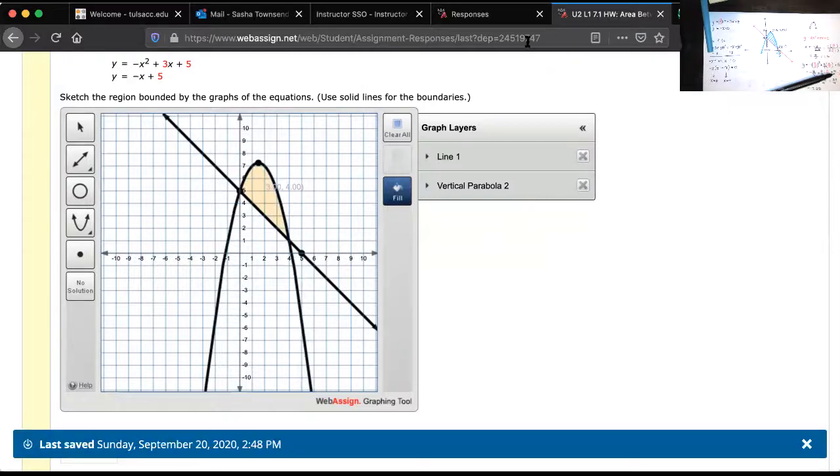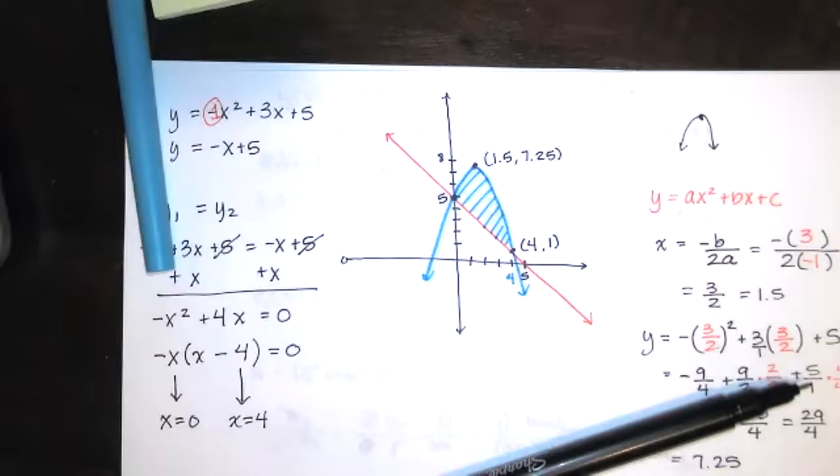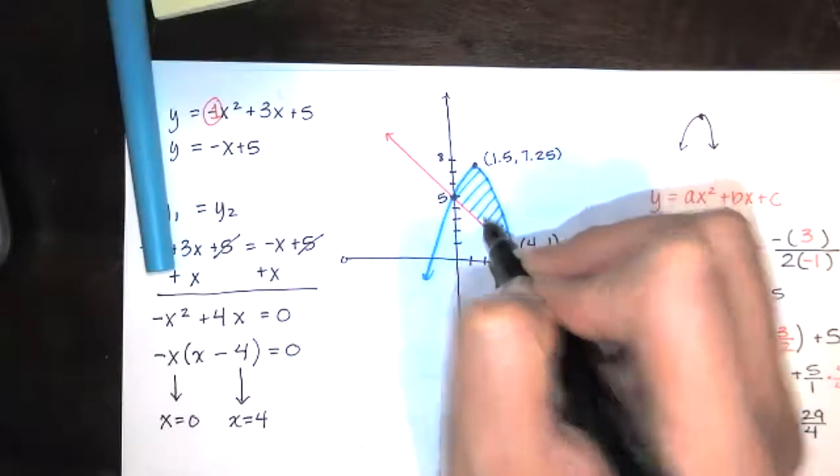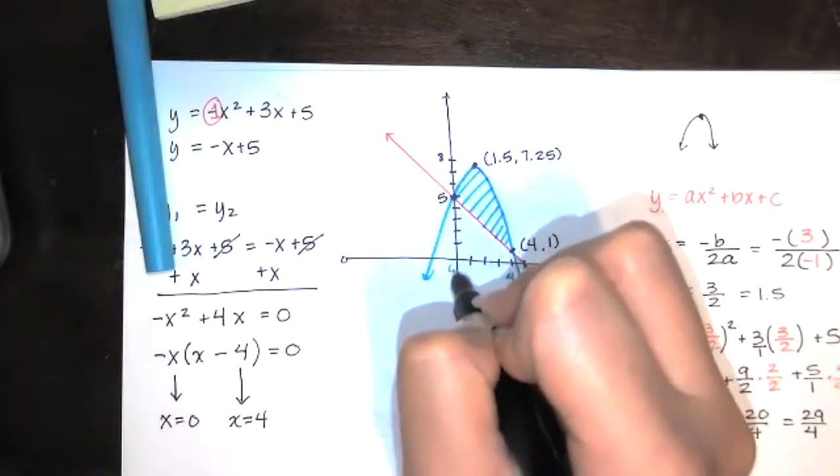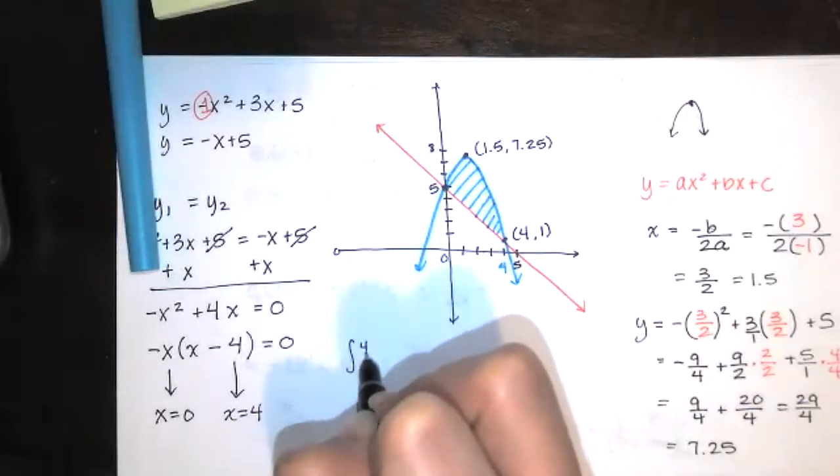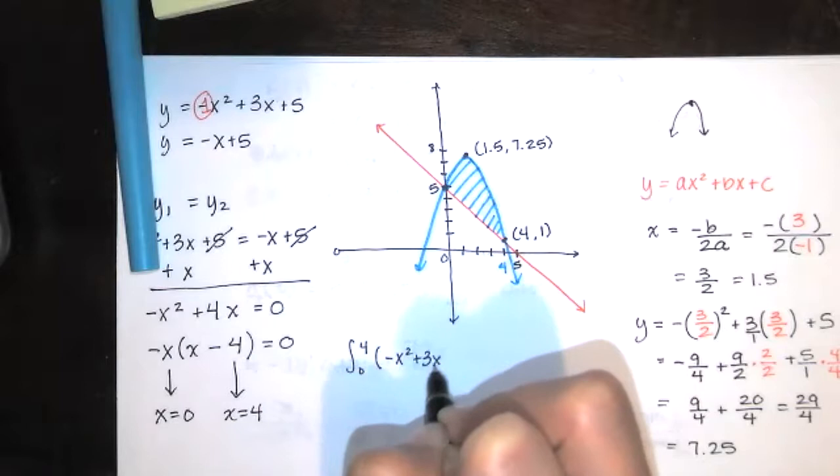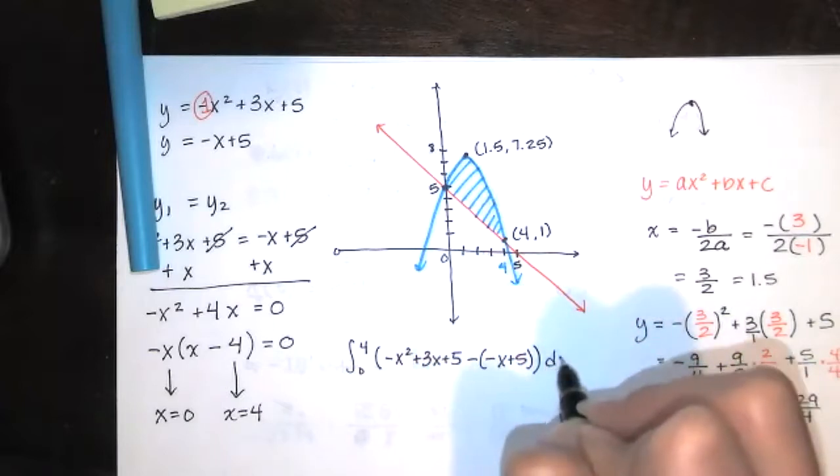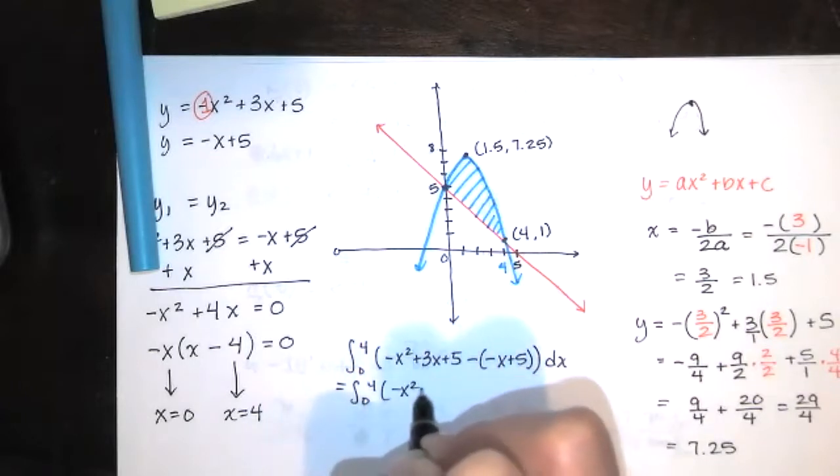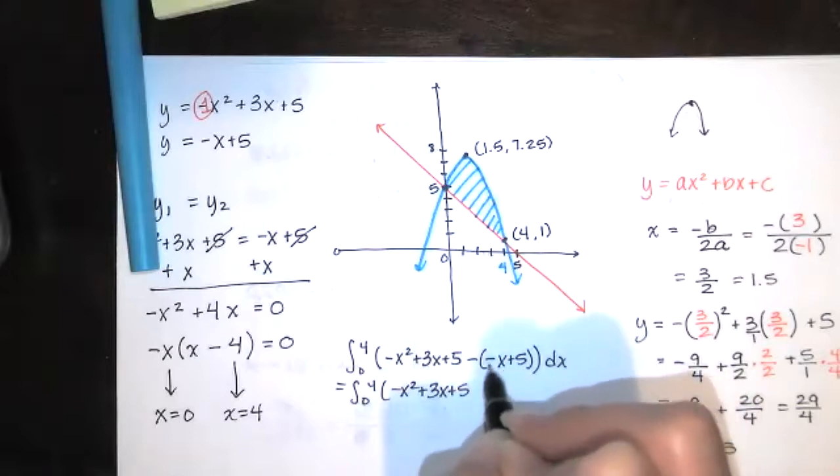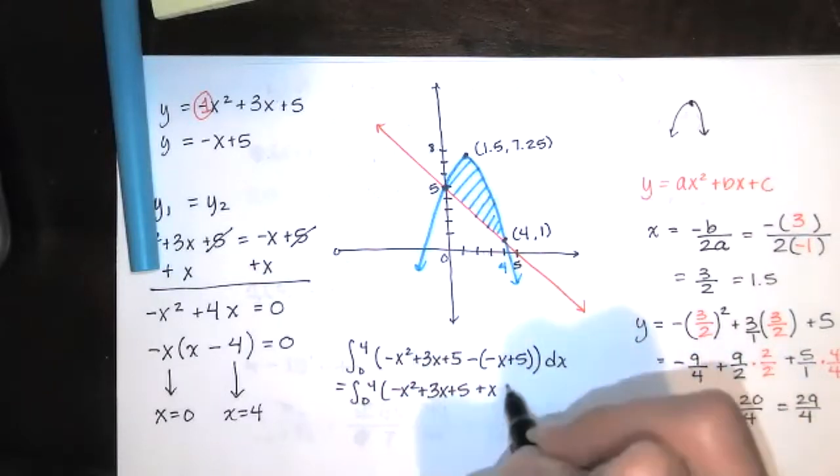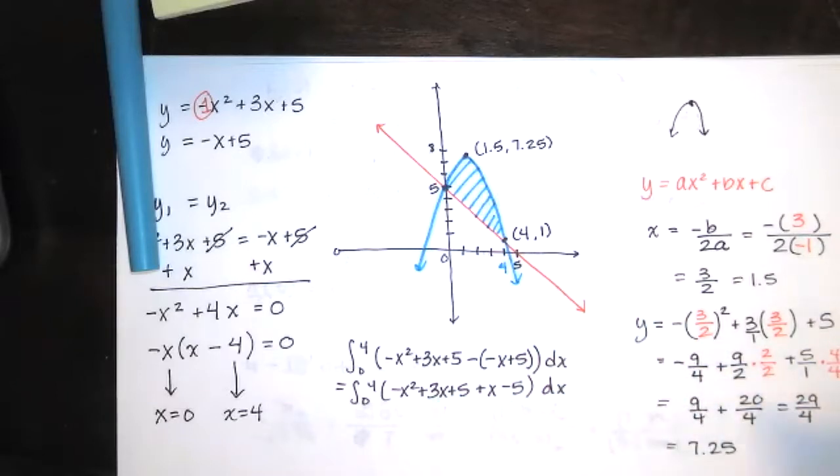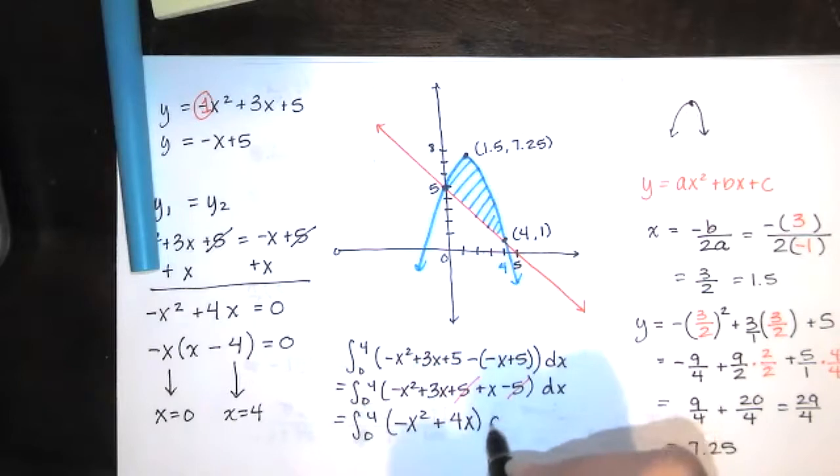Now, let's switch to our paper momentarily. So, we want the top function minus the bottom function. We start at x equals 0 and we end at x equals 4. So, we're integrating from 0 to 4. The top function is the parabola. The bottom function is negative x plus 5. Make sure you include some parentheses there because that negative distributes to both terms. So, we've got negative x squared plus 3x plus 5. Distribute the negative. A negative times a negative is a positive x. A negative times a positive 5 is a negative 5. The 5s reduce. And now, you just have the integral of negative x squared plus 3x plus x, which is 4x, with respect to x.